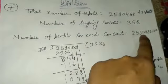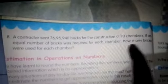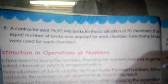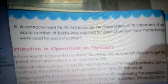Question 8: a contractor sent 76,95,940 bricks for the construction of 70 chambers. If an equal number of bricks was required for each chamber, how many bricks per chamber? Since they asked for each chamber, we divide — similar to Question 7. Like this, you can attempt all the questions in your notebook. Students, quickly complete your work and send the pictures to me.